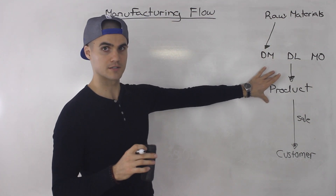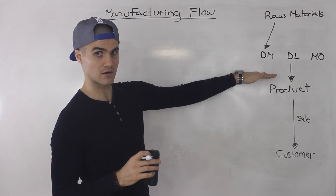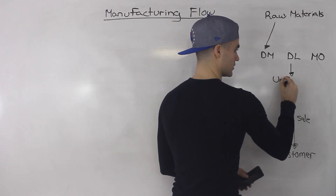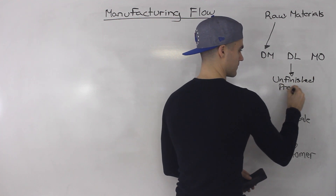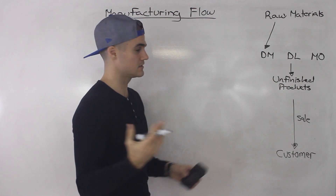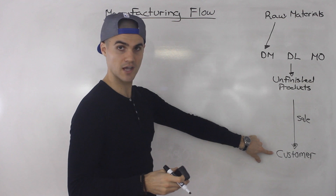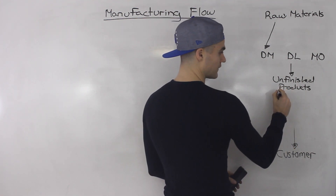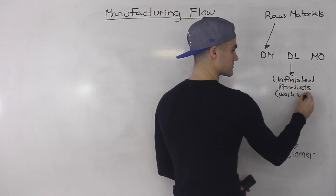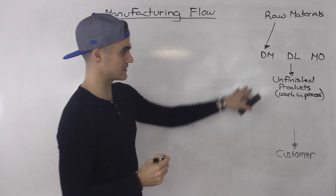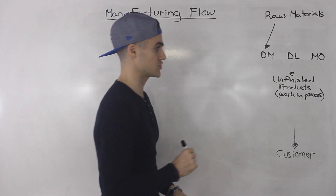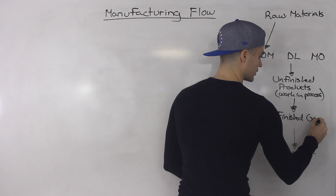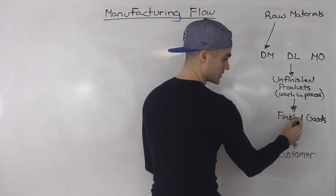Another thing I want to mention is that once you have production, you have a product — but there are actually multiple layers here. You can have unfinished products. If a product takes more than one day to complete, you're not always going to have a finished product ready for sale. You're going to have some unfinished products still in production. Another name for unfinished products is 'work in process.' When you see 'work in process,' it basically means unfinished products still being worked on. Then you're going to have finished products — called finished goods — and once you have finished goods, you can make a sale to the customer.